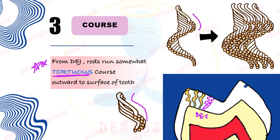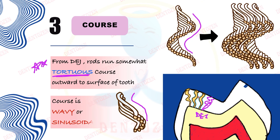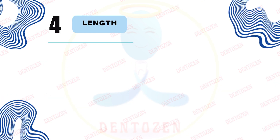Because this course can resemble waves, it is also said to be wavy or sinusoidal. That can be your entrance question: the course of enamel rods can be described as tortuous, wavy, or sinusoidal.